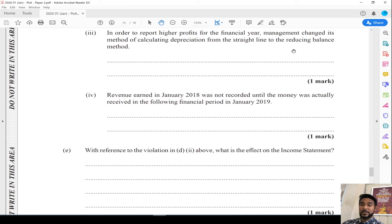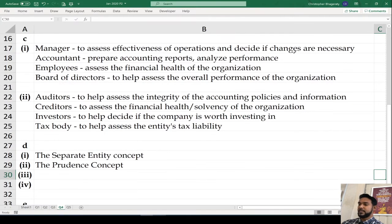In order to report higher profits for the financial year, management changed the method of calculating depreciation from straight line to reducing balance. That's a violation of the consistency concept. The consistency concept says that when treating specific accounting items from one financial period to the next, treat them in the same way. Don't just change your methods of calculating stuff willingly, especially just to enhance how your profitability looks.